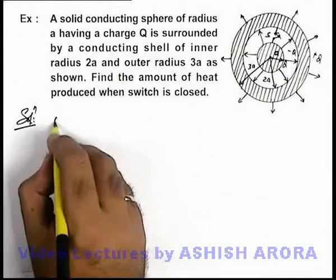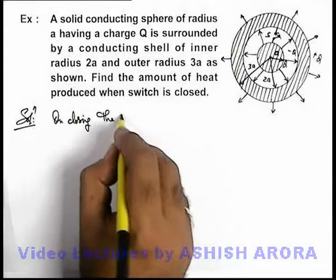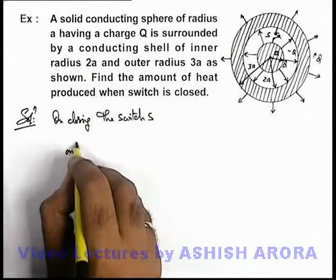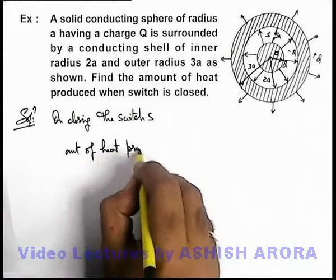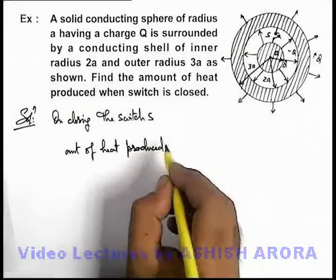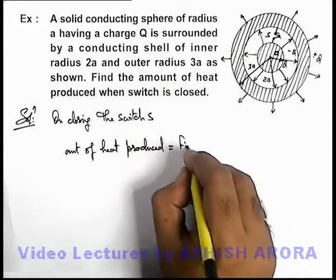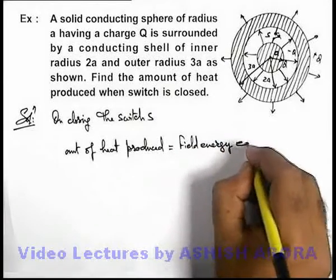On closing the switch S, the amount of heat produced is basically the loss in energy, which can be written as field energy earlier stored.